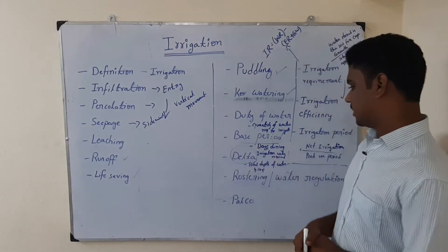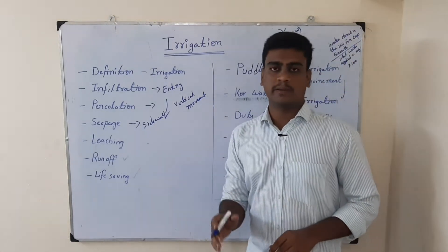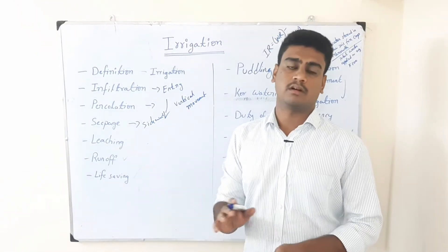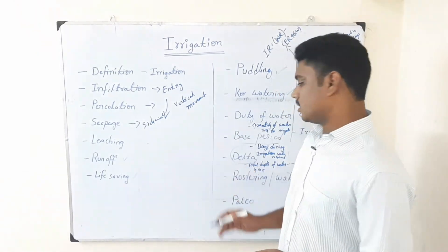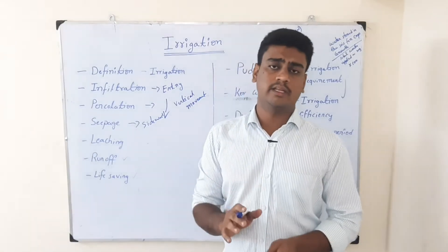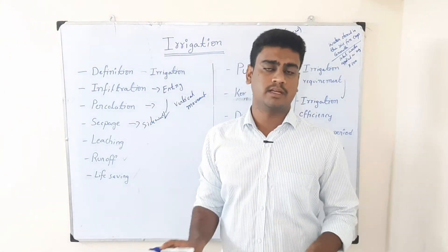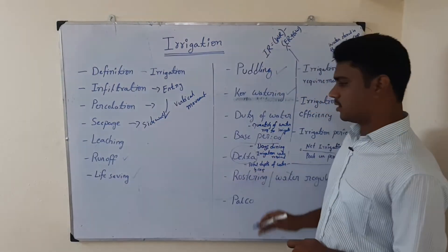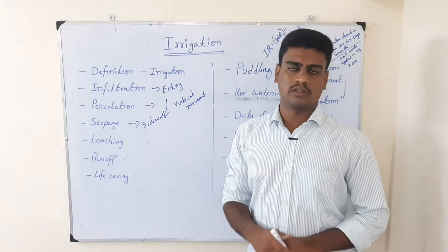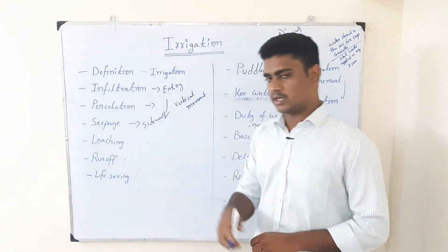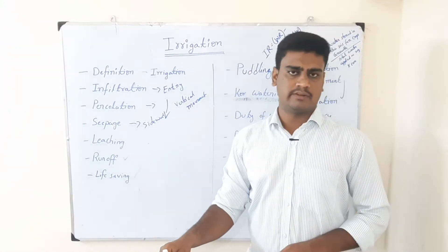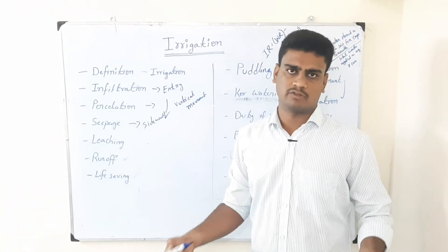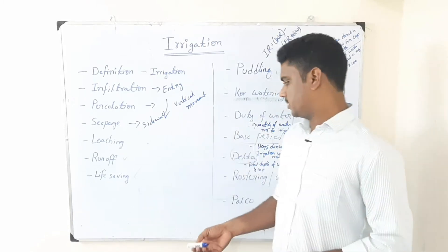Let us see delta. Delta is nothing but the total depth of water required by the crop for its entire life — that is called delta. This is measured in centimeters — not millimeters, but centimeters — that is a very important point. So the total depth of water required by the crop for its growth and development is delta, measured vertically. It may be 10 centimeters or 20 centimeters, varying based on the crop.